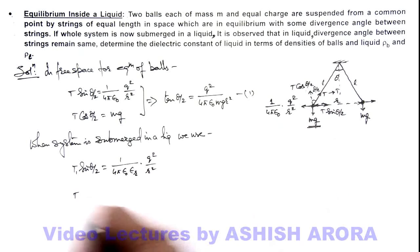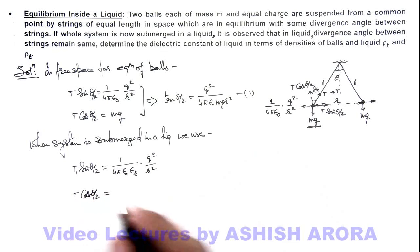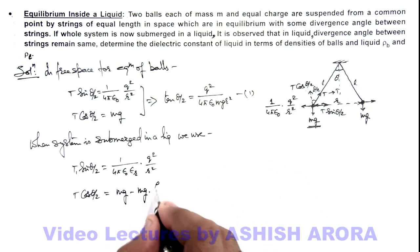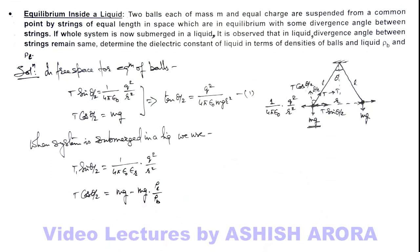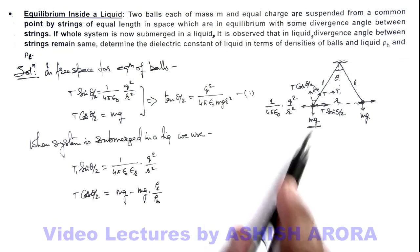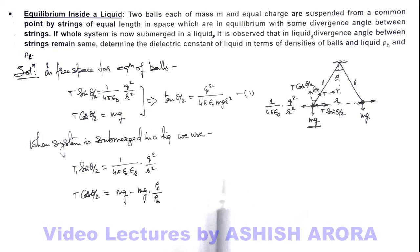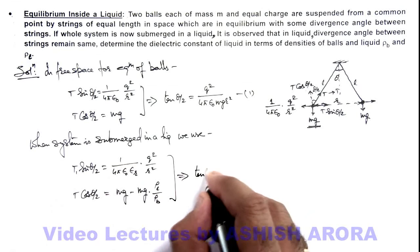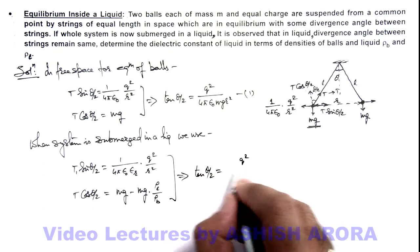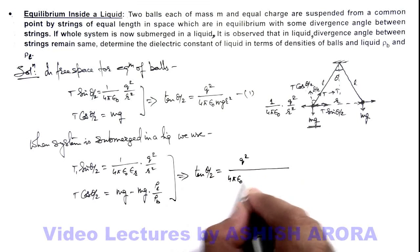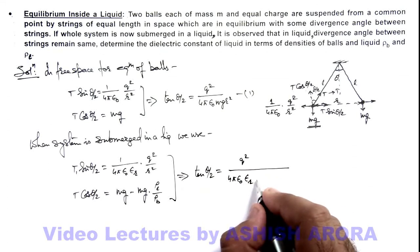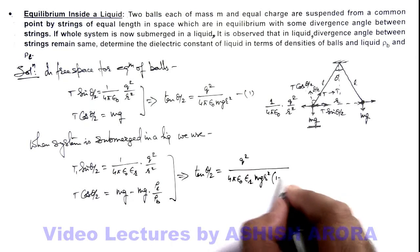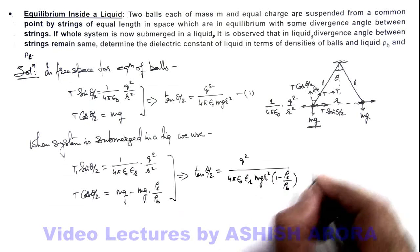And on the other side, T1 cos(θ/2) is equal to this will be mg minus the buoyant force acting on it, which is mg multiplied by ρ-liquid over ρ-balls. About buoyant force, we already studied in conceptual videos of fluid statics, where the buoyant force equals the weight of liquid displaced. So dividing these 2 relations gives tan(θ/2) = q² divided by 4π epsilon-naught epsilon-r, multiplied by mg · r², multiplied by (1 minus ρ-liquid over ρ-balls). This is our Equation 2.